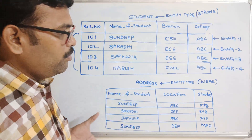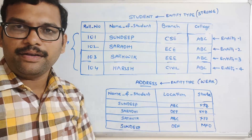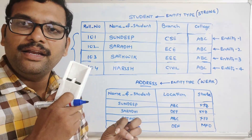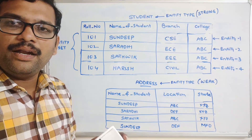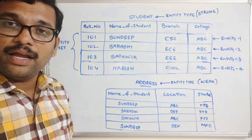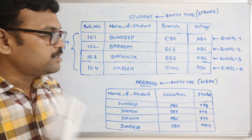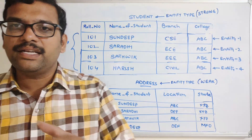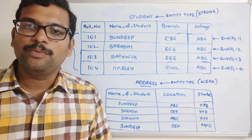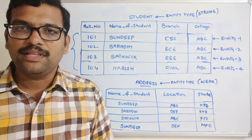So this is how we identify entities, entity sets, strong entities, and weak entities. Hope you understood what is an entity, entity set, entity type, and the different types: strong entity type and weak entity type, as well as tangible and intangible entities. If you have any doubts, feel free to post in the comment section. If you enjoyed the session, like, share with your friends, and don't forget to subscribe. Thanks for watching.